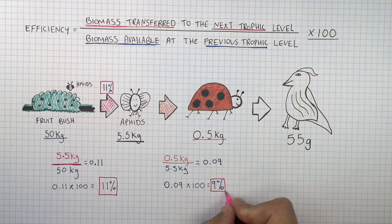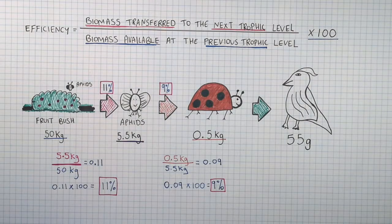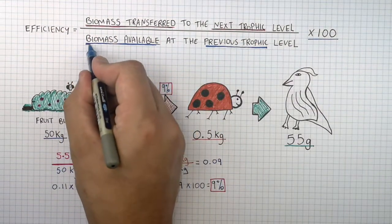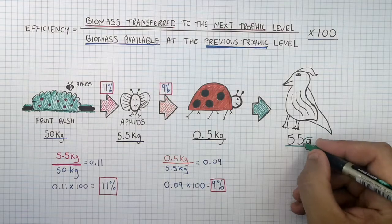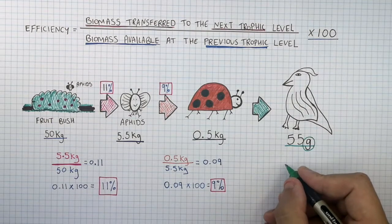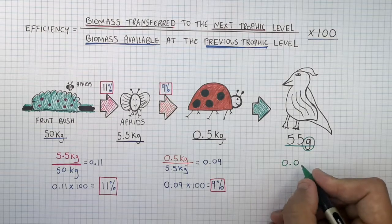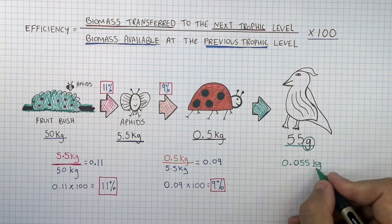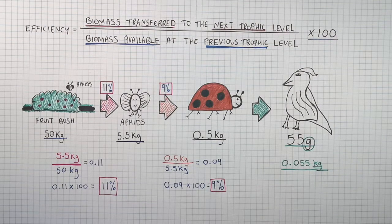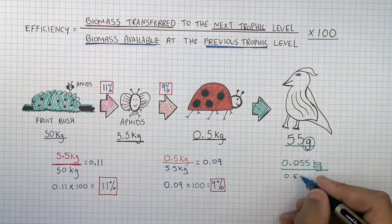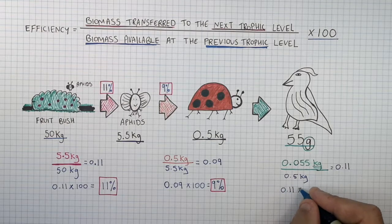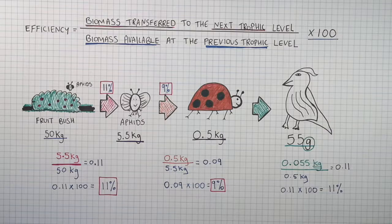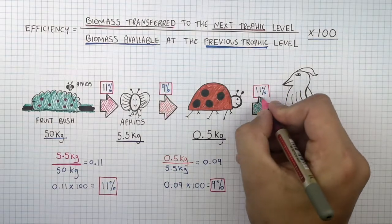That means 91% of the energy stored in the biomass of the aphids is transferred to other energy stores. For the next calculation, the biomass of the bird is in grams, so you convert it: 55 grams equals 0.055 kilograms. Dividing 0.055 kilograms by 0.5 kilograms gives 0.11, and multiplying by 100 gives 11%. So 11% of the biomass stored in the ladybirds is transferred to the biomass at the next trophic level.